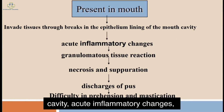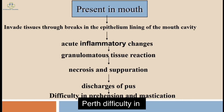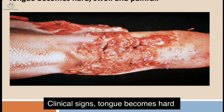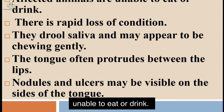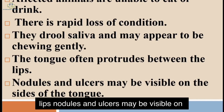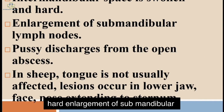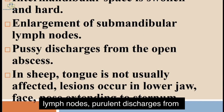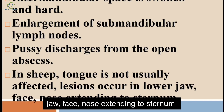Pathogenesis: organisms present in the mouth invade tissues through breaks in the epithelium lining of the mouth cavity, causing acute inflammatory changes, granular tissue reaction, necrosis, separation, discharge of pus, and difficulty in prehension and mastication. Clinical signs: the tongue becomes hard, swollen, and painful. Affected animals are unable to eat or drink, show rapid loss of condition, drool saliva, and may appear to be chewing gently. The tongue often protrudes between the lips; nodules and ulcers may be visible on the sides of the tongue. The interdental space is swollen and hard, with enlargement of submandibular lymph nodes and pussy discharges. In sheep, the tongue is not usually affected; lesions occur in the lower jaw, face, and nose, extending to the sternum.